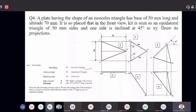First of all, draw the base on the VP. This is the VP. This base is given to be 50 mm. This length of altitude is given to be 70 mm.